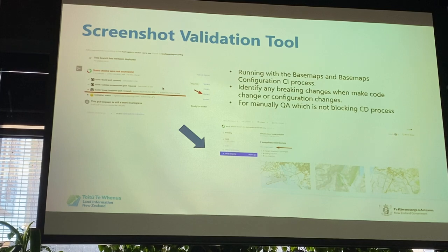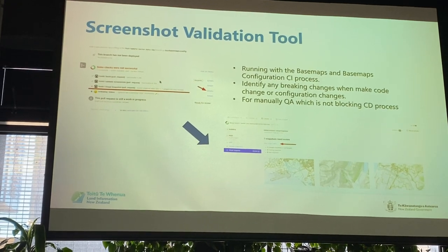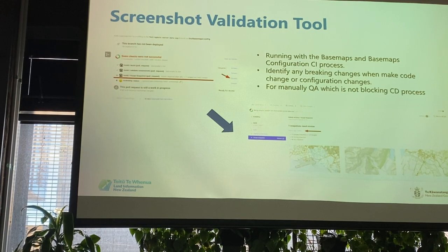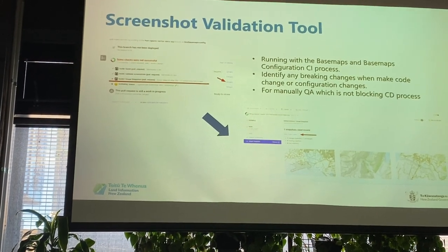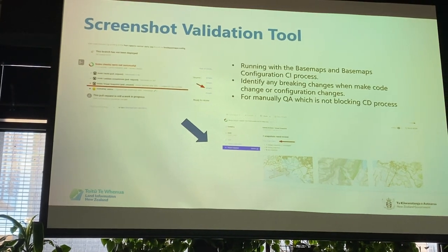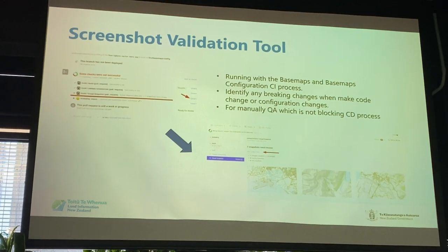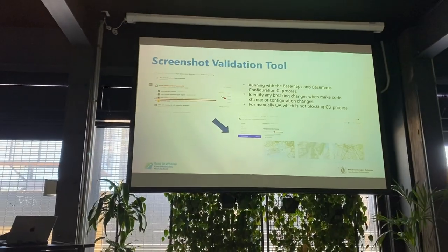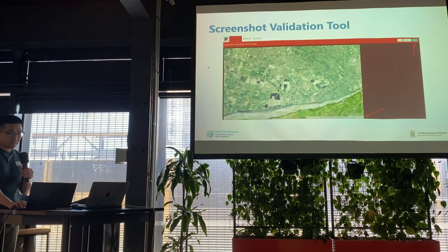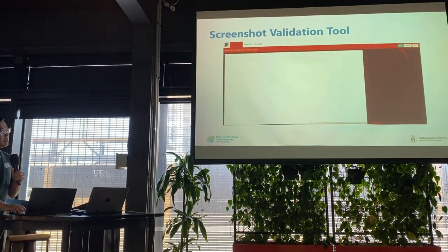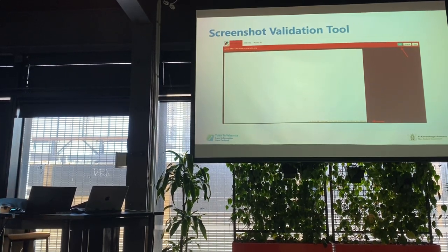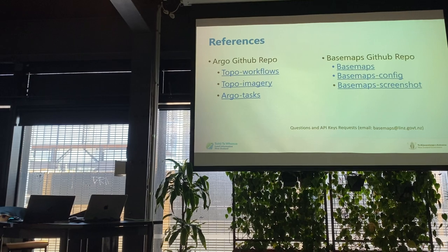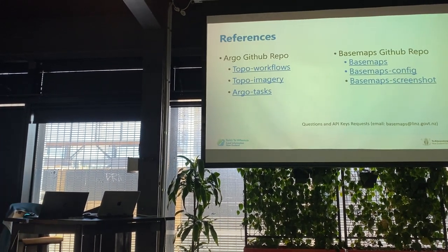The last item is the screenshot validation tool added to both the basemap and basemap config CI/CD process. It validates changes to configs and the code base by starting a local server with the changed config or code, taking screenshots, and comparing them against production screenshots on testing tiles — alerting if any changes are detected so we know if a change is expected or not. For example, if we change a font color to be darker and bolder, the screenshot tool highlights the changed parts. We can then decide whether to merge. There are also some public GitHub repository references related to the presentation for those interested.